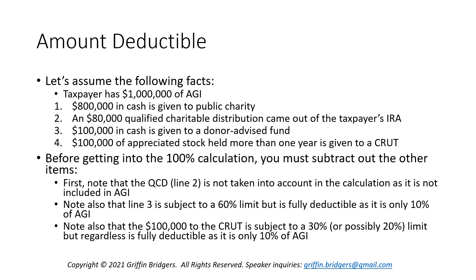To illustrate this, consider a taxpayer with $1,000,000 of AGI in 2021, with charitable contributions as follows: $800,000 in cash to a public charity; $80,000 as a qualified charitable distribution out of their IRA; $100,000 in cash to a donor-advised fund; and $100,000 in appreciated stock held more than one year given to a CRUT. Before getting into the 100% calculation, we must address the other items. The $80,000 qualified charitable distribution is excluded because it's not included in gross income — it goes directly from the IRA to the charity and reduces the required minimum distribution, so there's nothing to deduct there; you can't double dip.